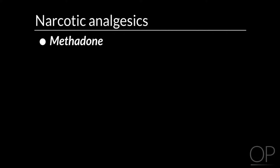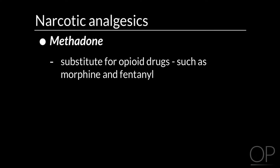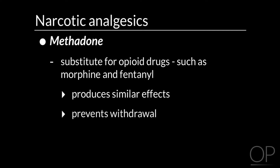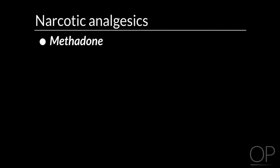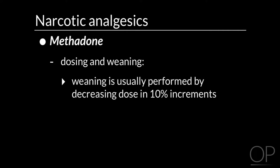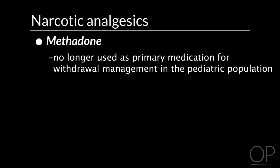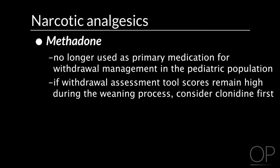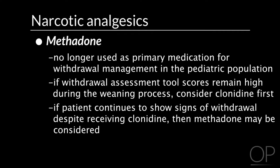Methadone is indicated for opioid withdrawal. It works as a substitute for opioid drugs such as morphine and fentanyl by producing similar effects and preventing withdrawal symptoms. Dosing and weaning should be monitored closely while watching for signs of withdrawal. Weaning usually takes place in 10% increments. Point of clarification: methadone is no longer used as the primary medication for withdrawal management in the pediatric population. If withdrawal assessment tool scores remain high during weaning, clonidine should be considered first. If the patient continues to show signs of withdrawal despite receiving clonidine, then methadone may be considered.